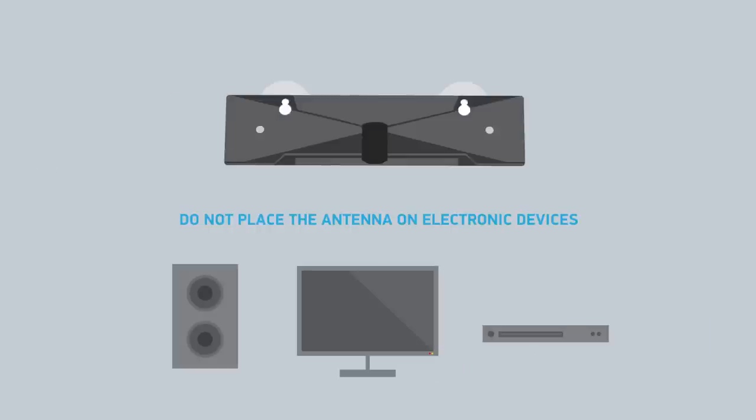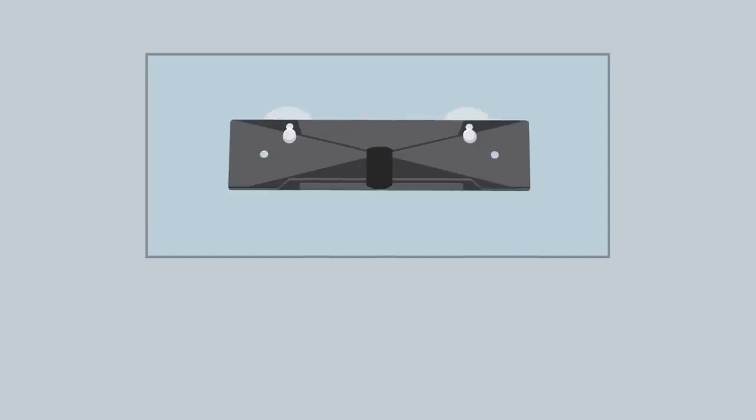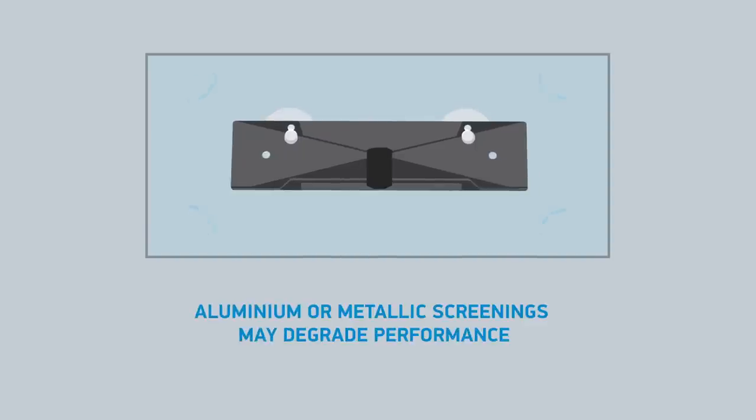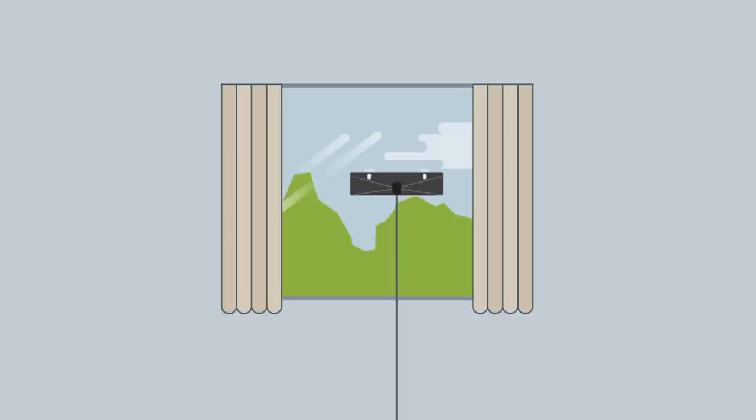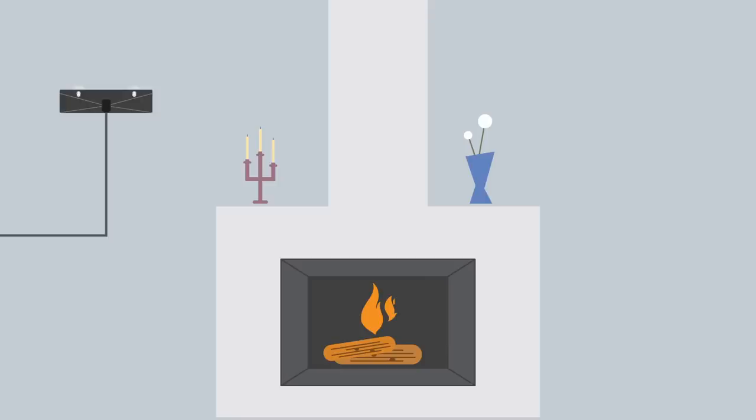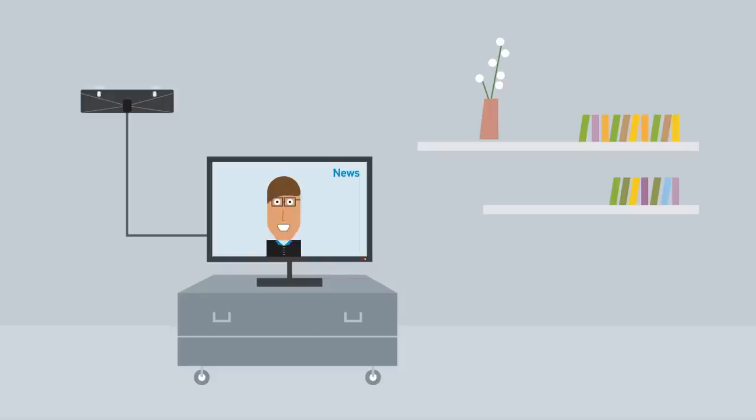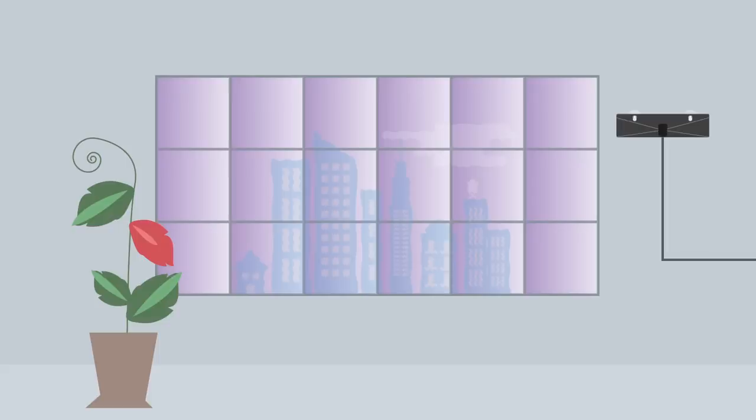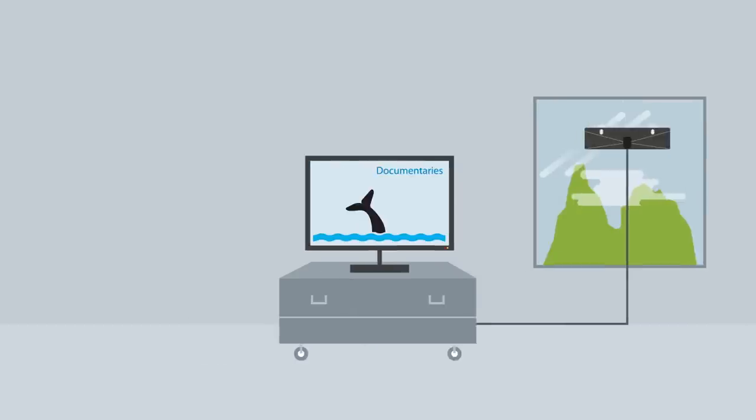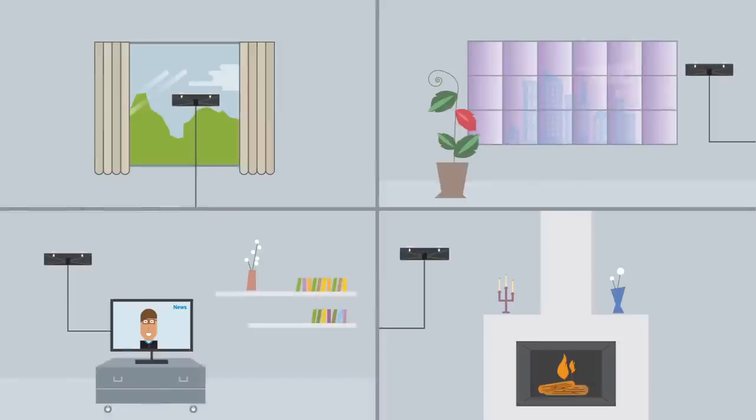Antenna performance might be degraded when placed on electronic devices or when blocked by aluminum or metallic screenings. However, especially in case of analog signal reception, do not hesitate to affix the antenna on different places. The number of channels you will receive vary depending on where you live, the local terrain and placement of your TW1 antenna.